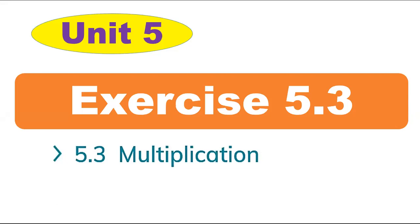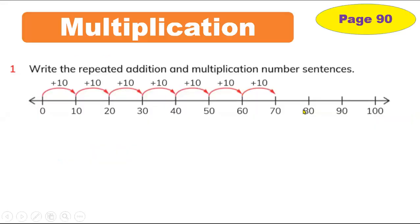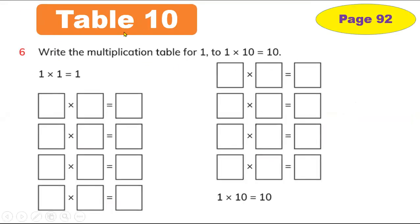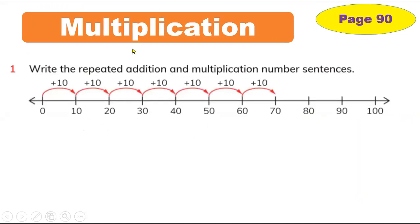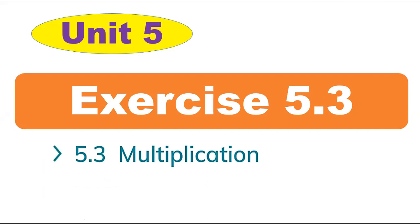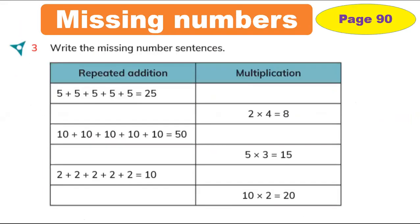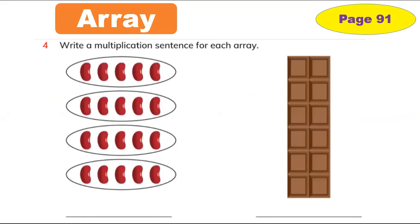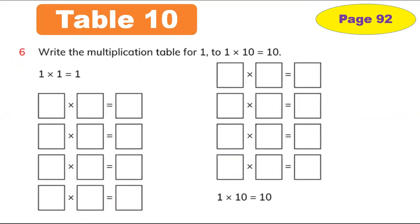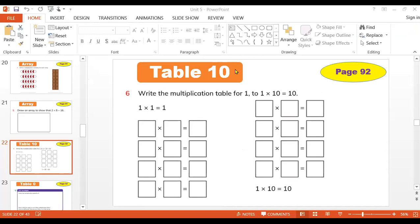Hi everybody, today we are going to learn Table 1. In the last lesson we learned exercise 5.3 — multiply. You learned addition, then multiply, then how to make an array to find a number sentence. Now we are going to use Table 1 — how to make Table 1 from 1 to 10.